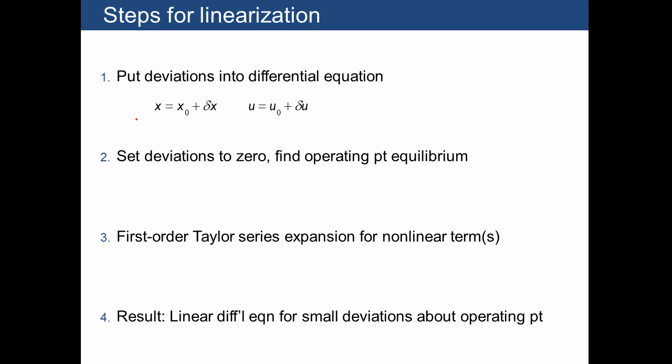Here's a summary of the steps for linearization. We are going to put the deviations into the differential equation. We're going to set those deviations to 0 to find the operating point at equilibrium, where this is actually going to be a very easy step, as we'll see. Then we're going to use our first-order Taylor series expansion, where we need df/dx evaluated at our operating point. And then we're going to drop any terms beyond this Taylor series expansion, and the result is going to be a linear differential equation for small deviations about the operating point.